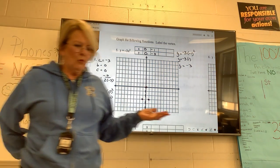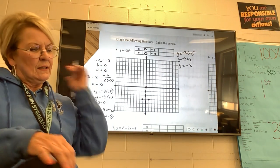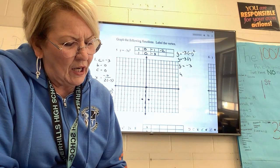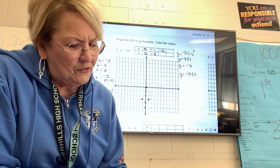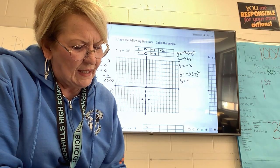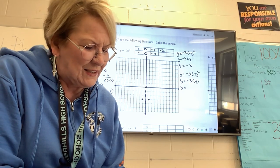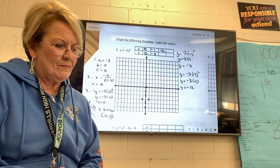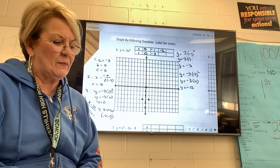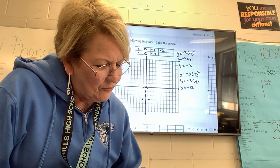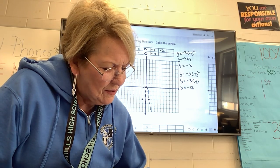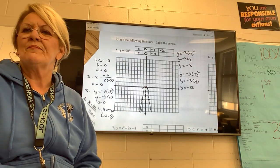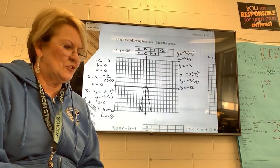I'm going to try one more — negative 2. Y equals negative 3 times negative 2 squared. Y equals negative 3 times 4. Y equals negative 12. I don't have enough space on that graph, so I'm not going to be able to use that point. I'll go ahead and sketch it — do my curve there, go down through here and down through here. It's not the most beautiful graph, but it's a sketch.